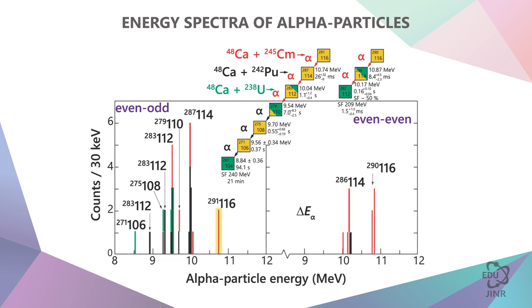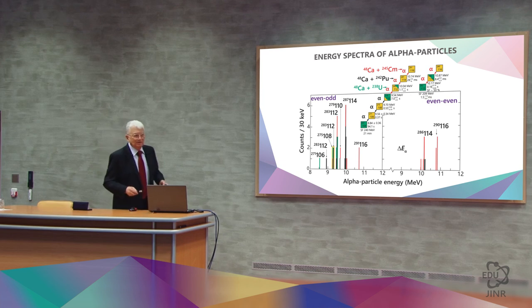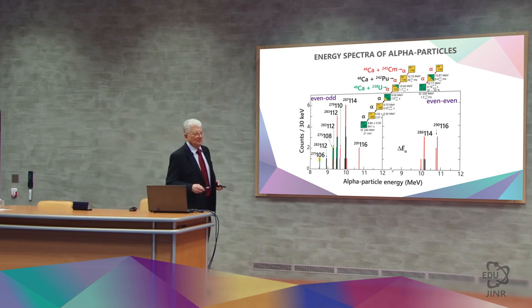Here is element 116 with an odd-numbered nucleus. Here it decayed into element 114, and then into element 112. Let's continue even further. Here it decayed into element 108, and then element 106.